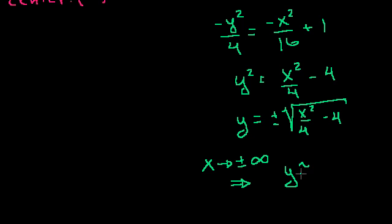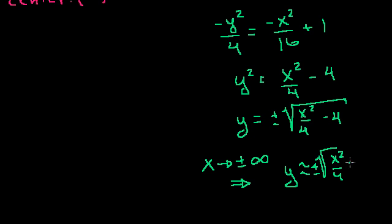As x approaches positive or negative infinity, what is y approximately equal to? The x squared over 4 term dominates — when x is a trillion or negative trillion, that term is huge and the minus 4 becomes negligible. So y approaches plus or minus the square root of x squared over 4, which is plus or minus x over 2, or one-half x.